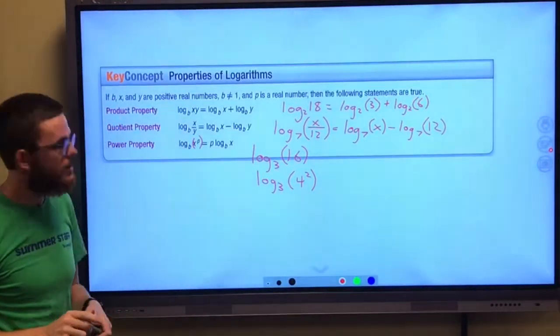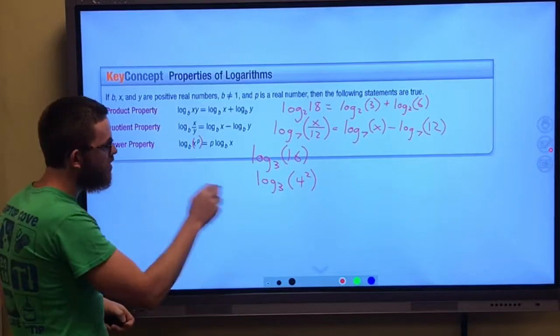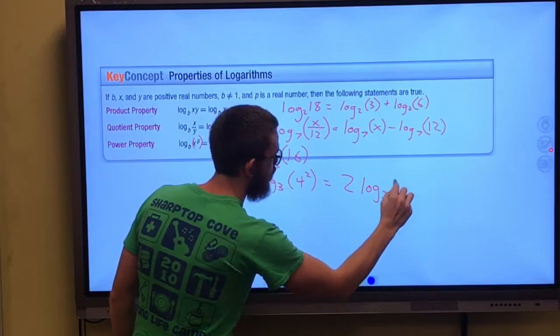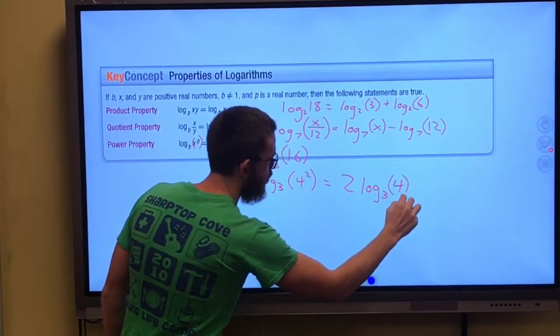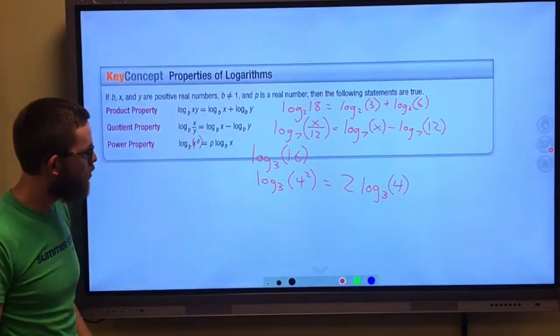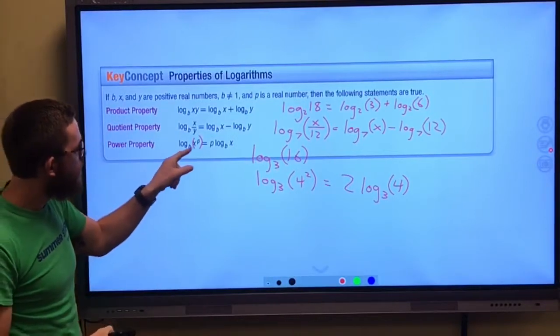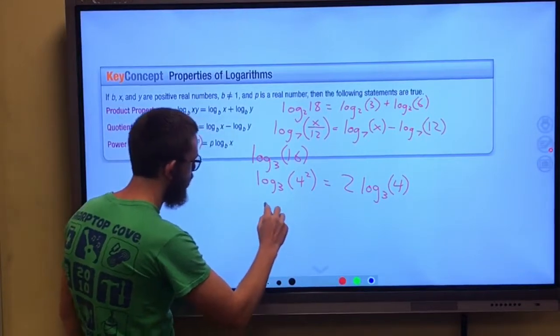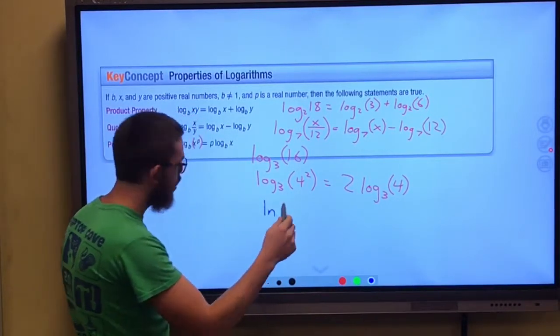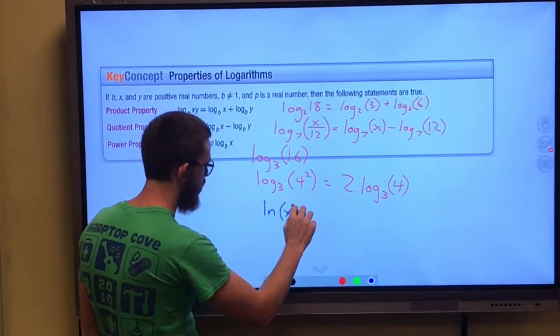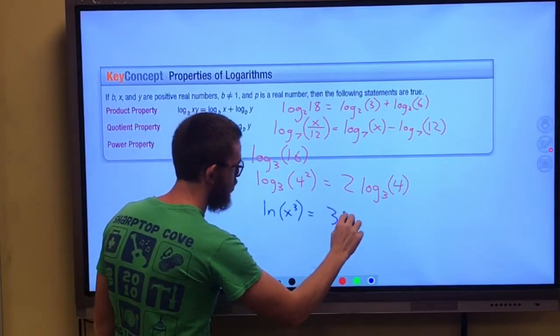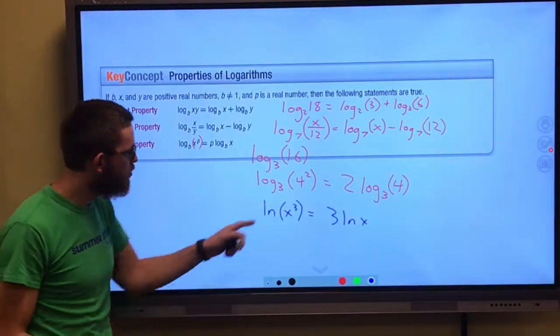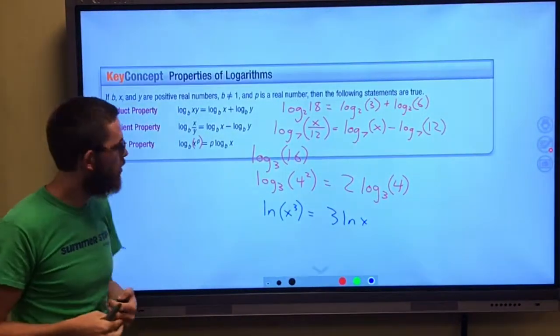So in this case, it would be 2 log base 3 of 4. So we're able to simplify this down a lot. If we see that exponent's applying to our x, maybe we have natural log of x cubed. Well, this would be 3 natural log of x. It's just very useful to get that exponent out from inside our logarithm.